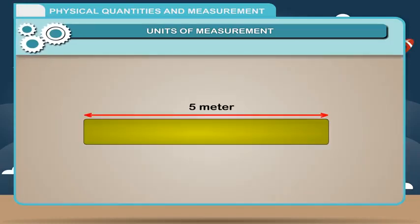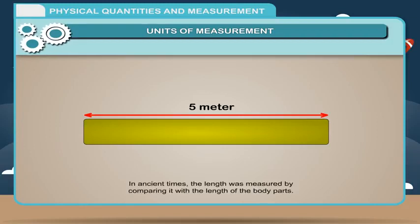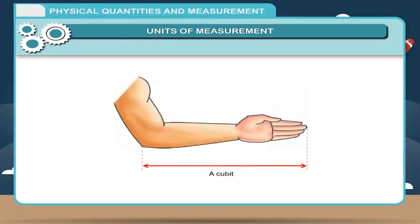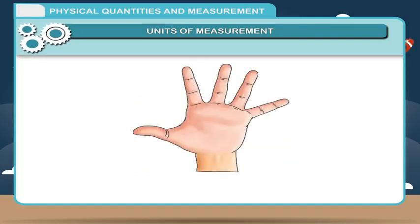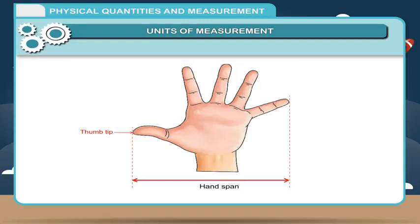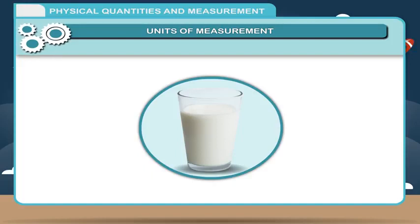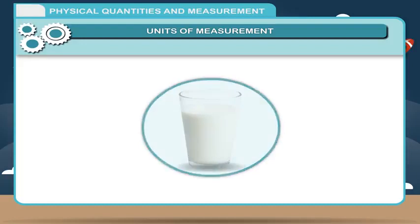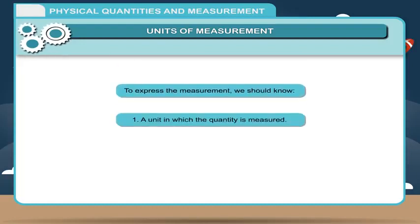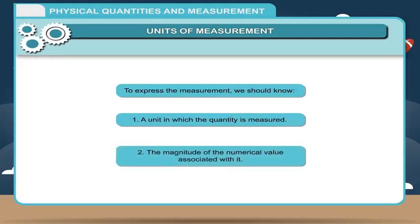Nowadays, to measure length, we use the unit metre. In ancient times, length was measured by comparing it with body parts. A cubit was the unit of length — one cubit was the length between the tip of the fingers and the elbow. Similarly, a hand span was the length from the tip of the thumb to the tip of the little finger. These methods were inaccurate because the size of fingers differs from person to person. In the same way, one cannot use a glass to measure the exact volume of liquid. Such systems of measurement were not correct. To express measurement, we should know: 1. A unit in which the quantity is measured, and 2. The magnitude of the numerical value associated with it.